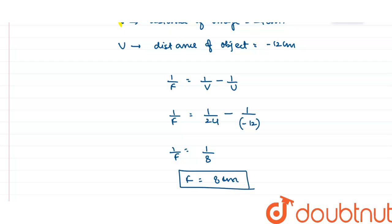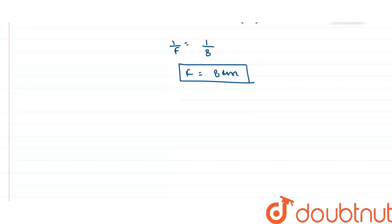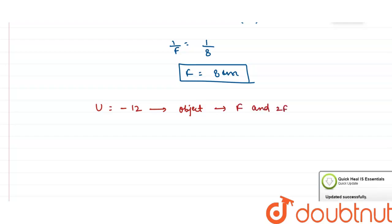Now if U is minus 12, that simply means object is between the focal length and 2F, the center of curvature. When object is between F and 2F, the image in a convex lens is made beyond 2F on the other side.